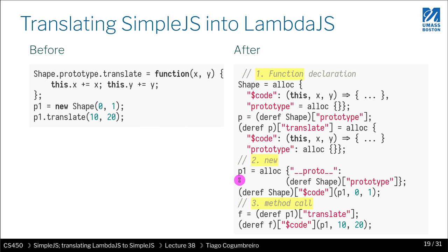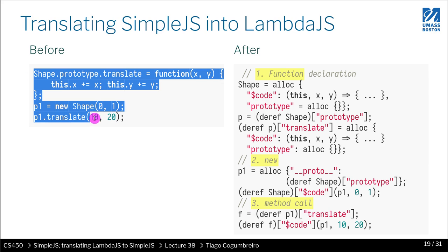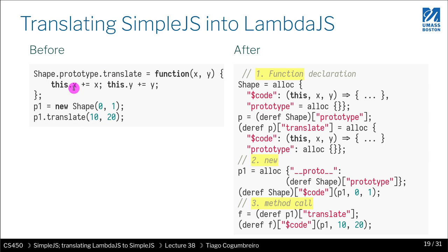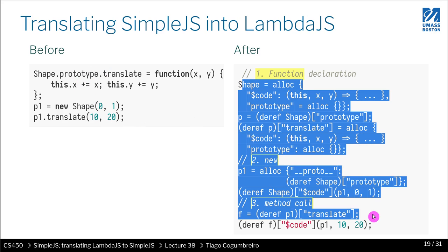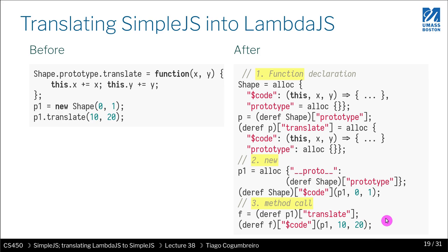Finally, let's go through the whole piece of code step by step. If you were to write these three or four lines — defining a prototype, adding a method 'translate', creating an instance with 'new', and calling the method — what that amounts to is all of the following, now with 'alloc' explicit and the 'dref's. These four simple lines generate a lot of code. In the next two videos, I'm going to cover each constructor by itself.